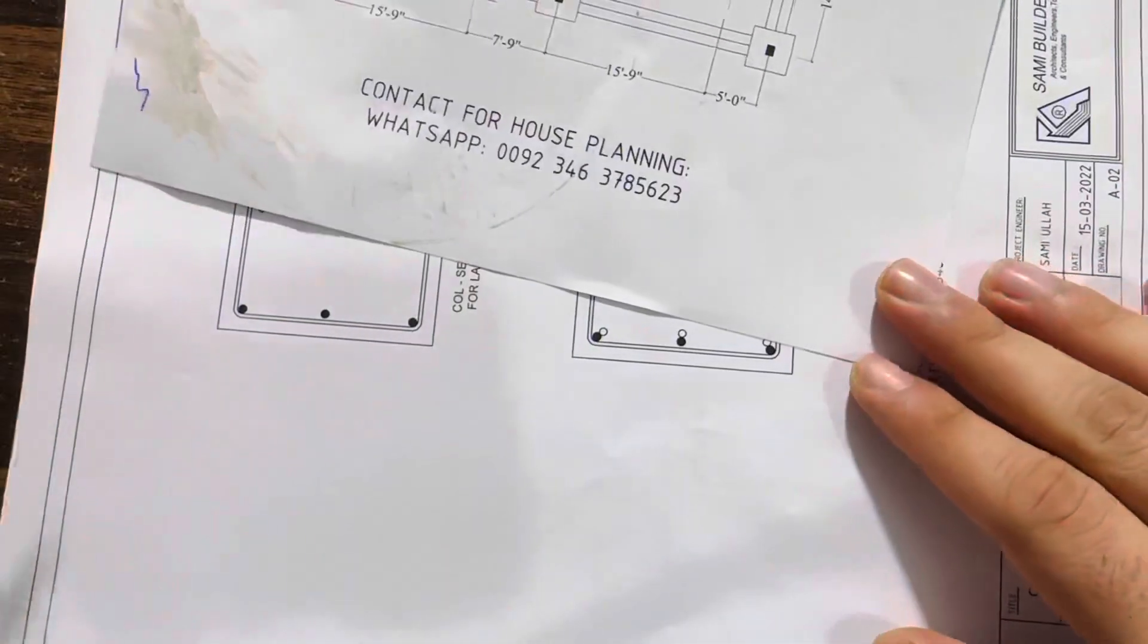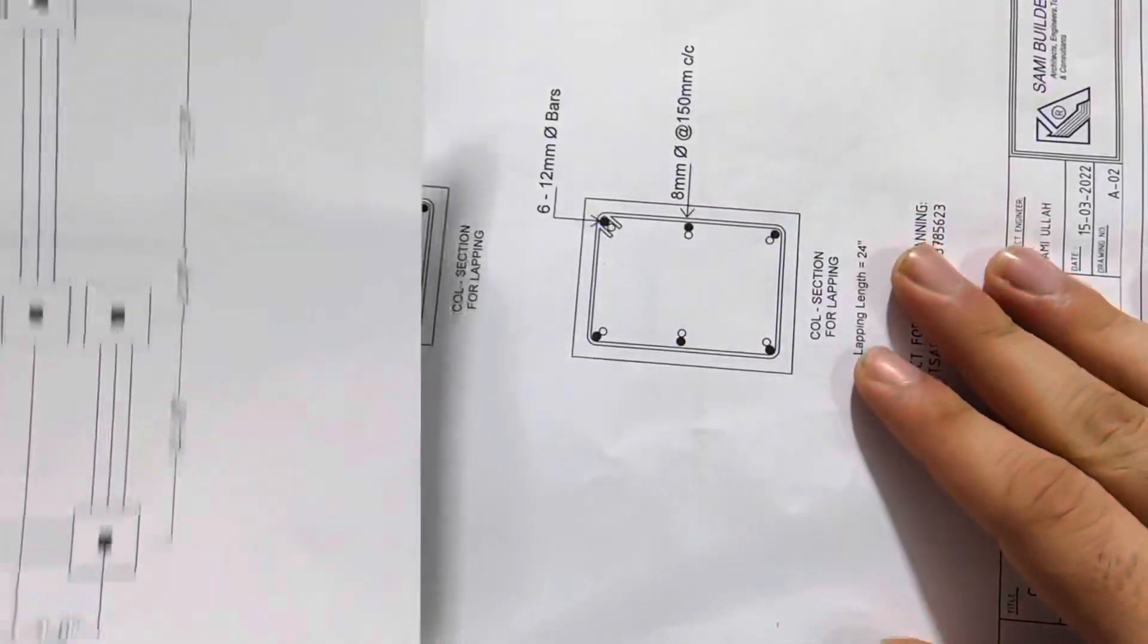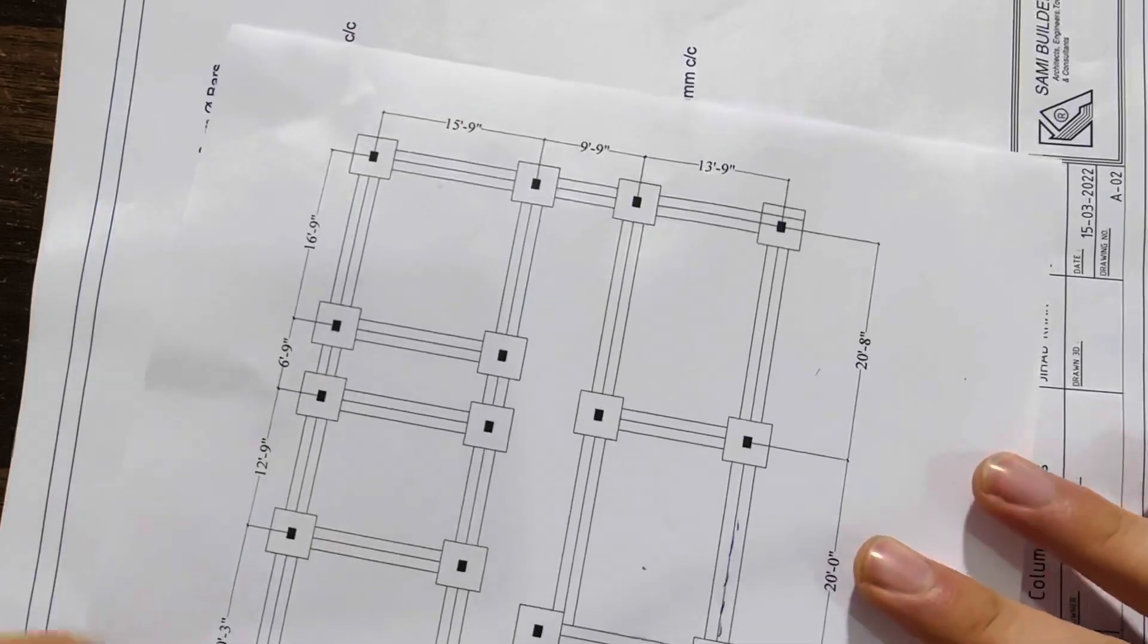The column size you can see clearly in this structural design. If you need house planning, structural drawing, 3D animation for any type of building, you can contact me on this WhatsApp number. This is paid services, not for free.